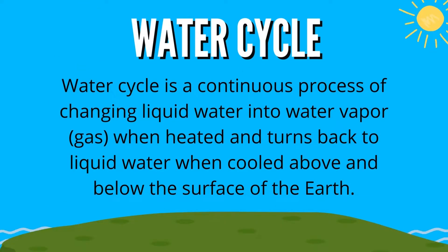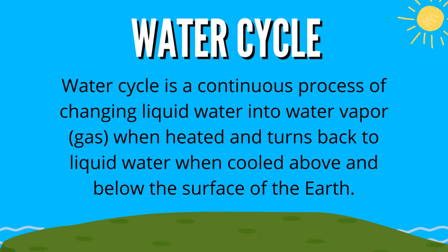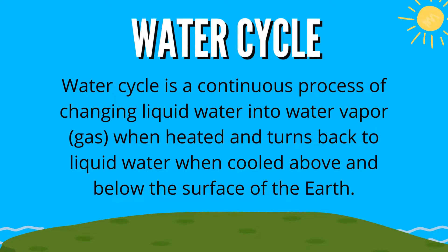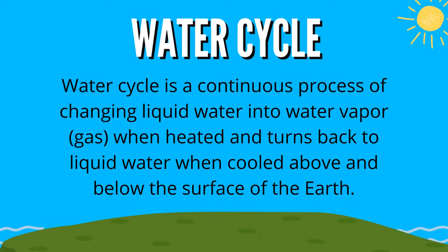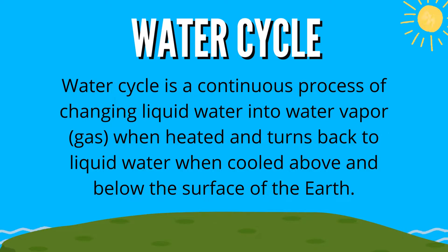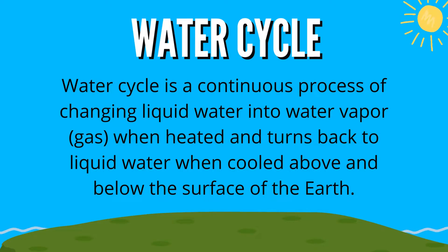So what is the water cycle? The water cycle is a continuous process of changing liquid water into water vapor or gas when heated, and turns back into liquid water when cooled, above and below the Earth's surface.